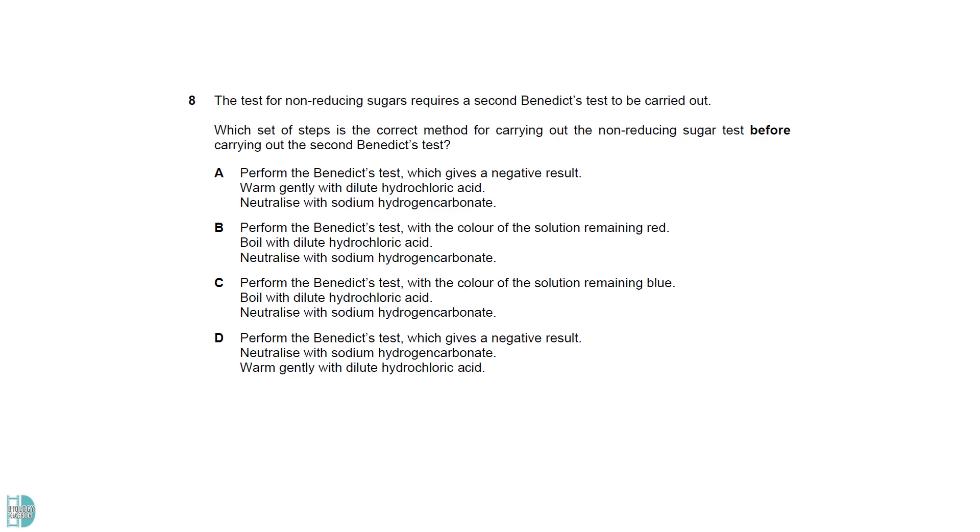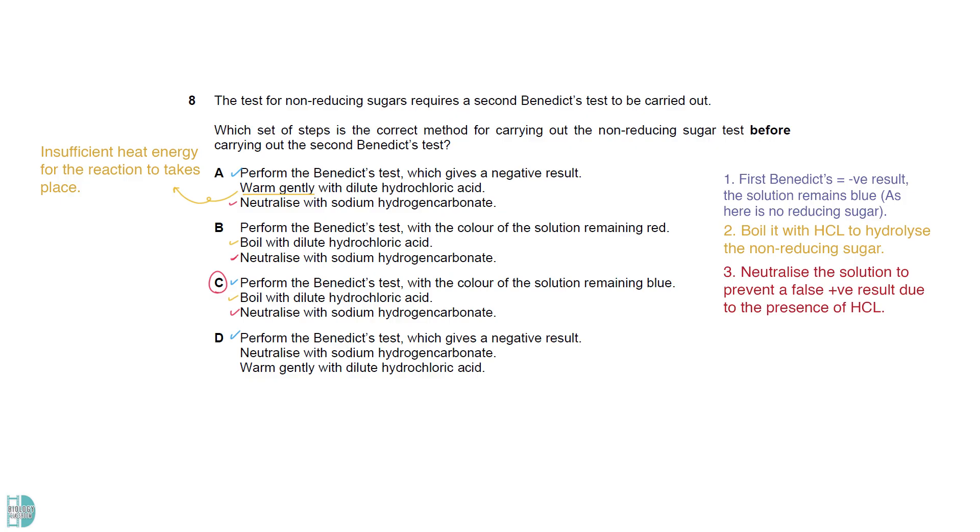The solution does not contain reducing sugar, so the first Benedict's result is negative. The solution remains blue. After that, we have to boil it with hydrochloric acid for the hydrolysis of the non-reducing sugar. Warming the solution is insufficient as it requires a large amount of heat energy. Lastly, we must neutralize the solution to prevent a false positive result due to the presence of hydrochloric acid.